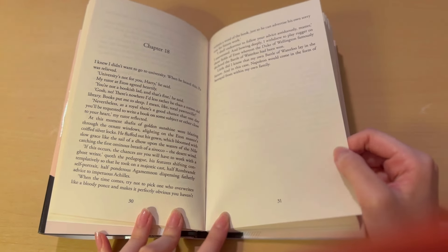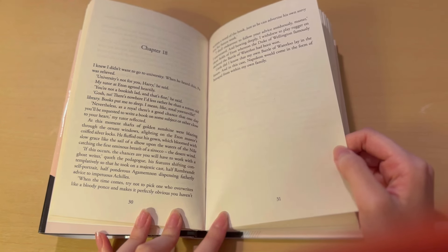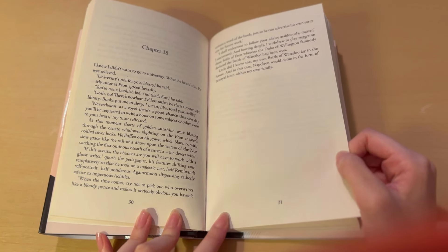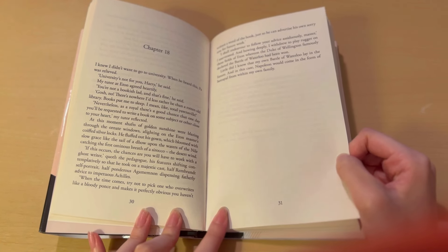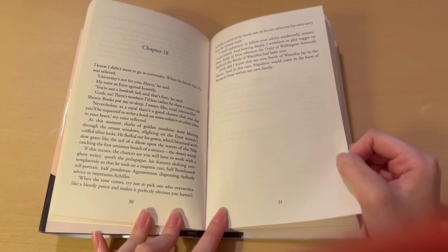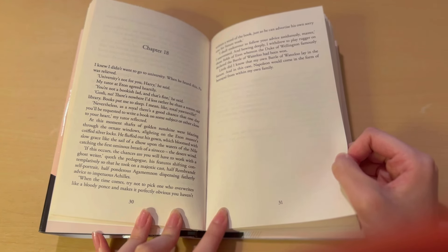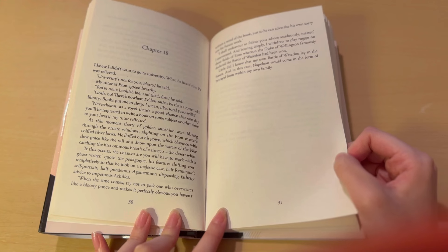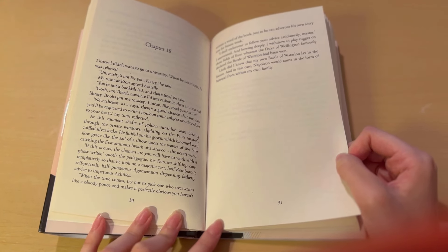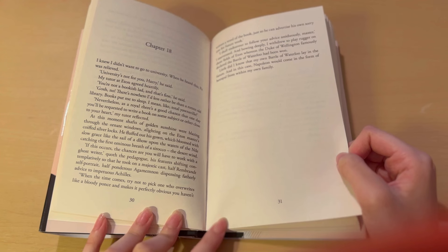That was a mouthful. When the time comes, try not to pick one who overwrites like a bloody ponce and makes it perfectly obvious you haven't written a word of the book, just so he can advertise his own sorry arse for future work. I shall endeavor to follow your advice assiduously, master, I asservated, and bowing deeply, I withdrew to play rugger on those fields of Eton, wherein the Duke of Wellington famously declared the Battle of Waterloo had been won.